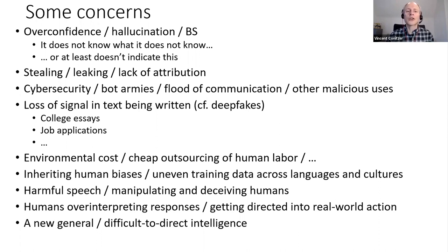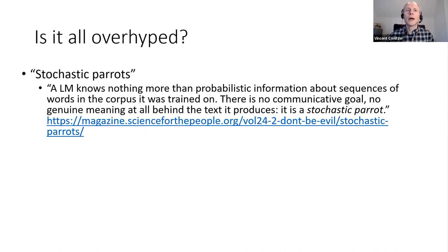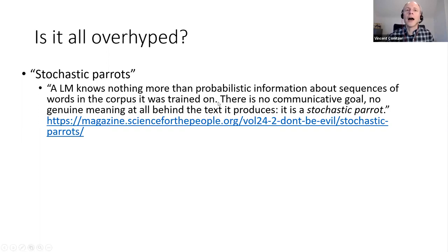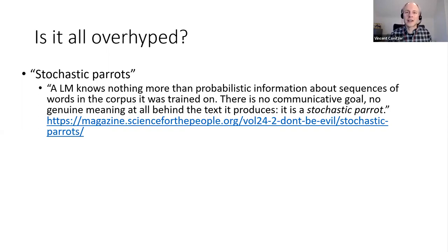Often we also hear that all of this is just overhyped. Various phrases get used — sometimes we hear they're 'stochastic parrots,' just parroting what we say back at us since they're trained on human-written language. To some extent that's true and it's a useful way to think about these systems, but often it comes up in a context of trying to downplay them. One framing says there's no communicative goal, no genuine meaning at all — an interesting philosophical question going back to Searle's Chinese Room argument about whether there is true understanding inside the AI system.